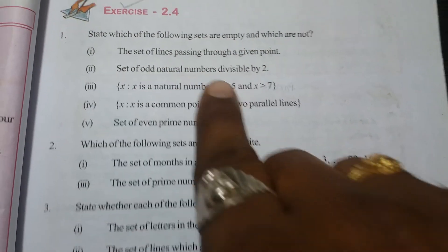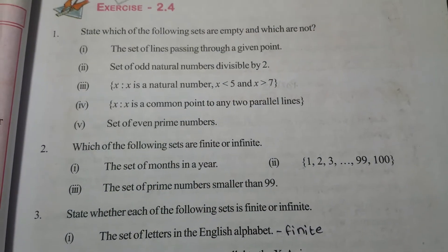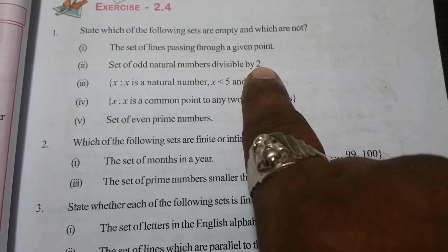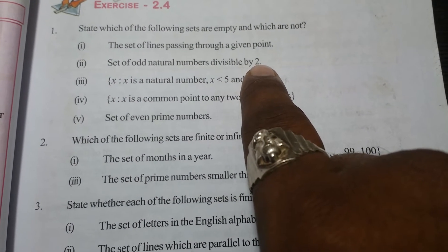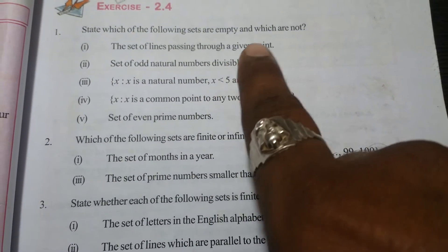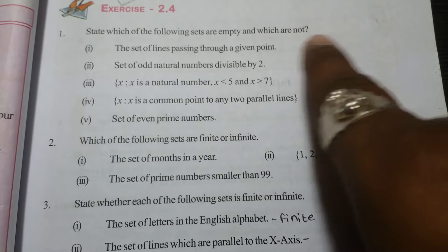Set of odd natural numbers divisible by 2. If we divide any odd number by 2, we are going to get a remainder of 1. So the set of odd natural numbers is not exactly divisible by 2, therefore it is an empty set.